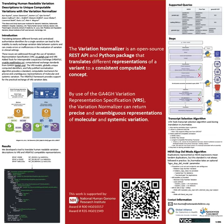We then do validation checks on these accessions, such as making sure that position 600 exists on the accession and checking that the reference allele sequence is as expected. For example, the first accession found V at position 600, which is what we expected, so it's valid. The second is invalid since we found T at position 600, which is not what we expected.